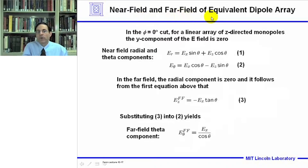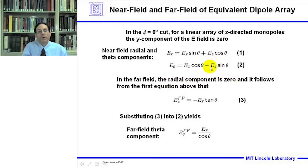The components of the near field and far field of the equivalent dipole array can be computed as follows. In the principal plane cut, phi equals 0, for a linear array of z-directed monopoles, the y component of the electric field is 0. The near-field radial and theta components can be calculated as shown. In the far field, the radial component is 0, as follows from equation 1. We can calculate the z-component of the far field from the x-component of the electric field. Substituting equation 3 into equation 2, we can calculate the theta component of the far field from the x-component divided by the cosine of theta.